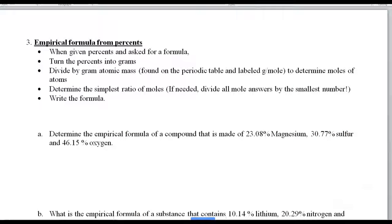The third type of problem is the longest problem. You know this problem because you are given percents. The percents are in the problem, and you're asked for a formula. So, turn the percents into grams. Turn each one of the grams into moles by dividing by its own gram atomic mass. And then we look and see if we can find the simplest ratio. And remember in class we said if you need to, divide all the answers by the smallest number, and the simplest ratio kind of pops out at you. Then you write the formula.